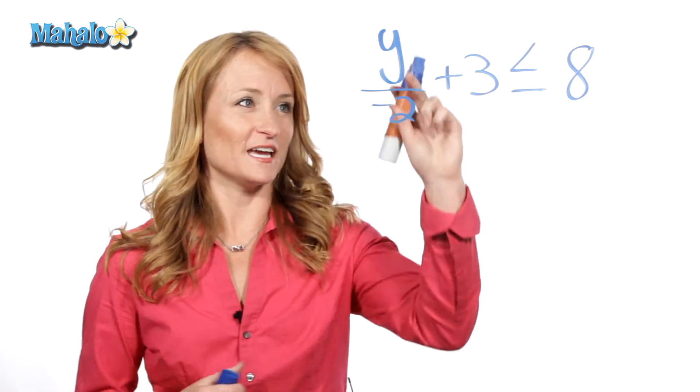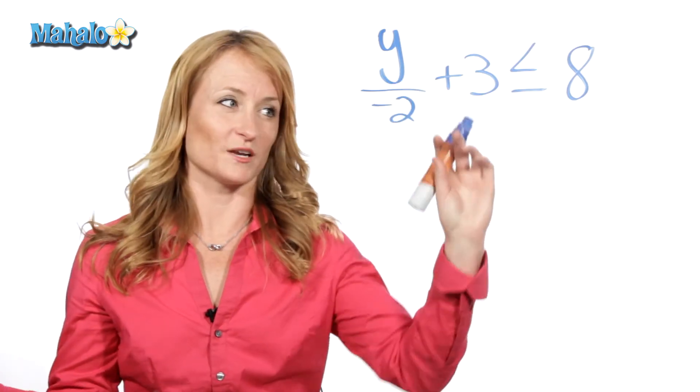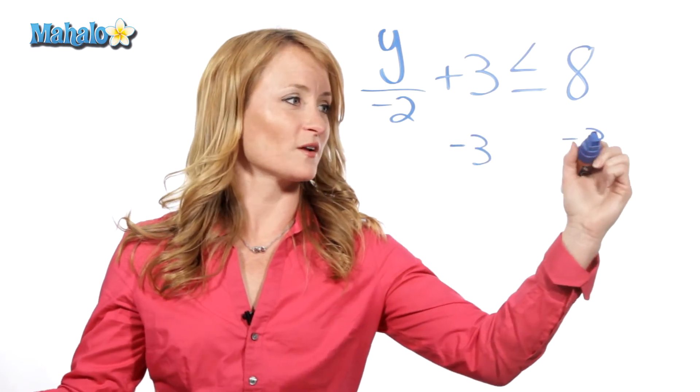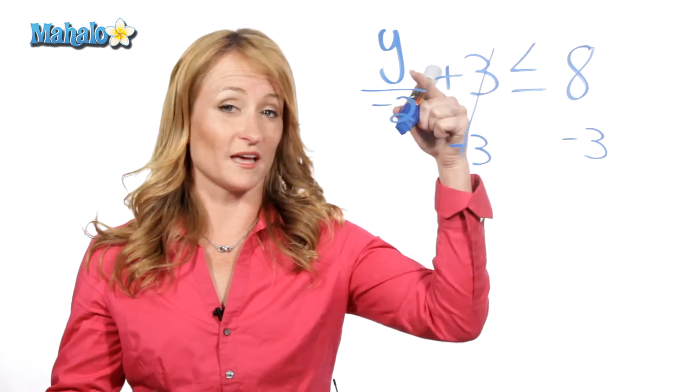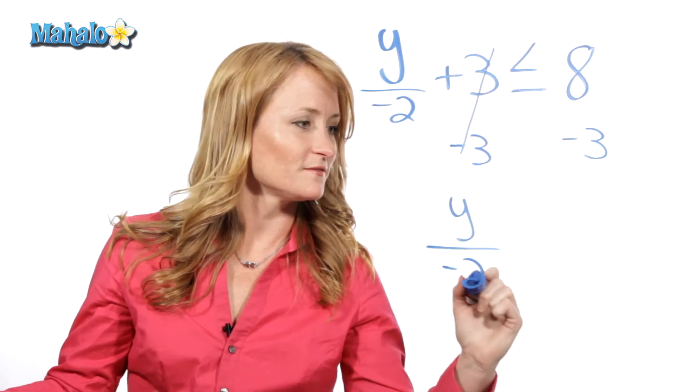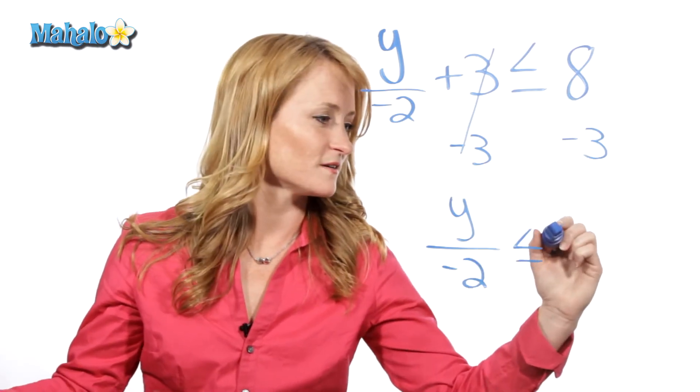So let's start with the basics. In order to get y by itself, we have to get rid of everything that's on this side. We're going to start by subtracting 3 from both sides. So subtract 3 from both sides, we're left with y divided by negative 2 is less than or equal to 8 minus 3 is 5.